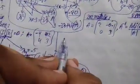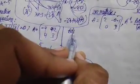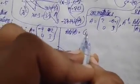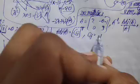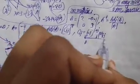We know the adjoint of A is equal to the transpose of the cofactor matrix, and the cofactor matrix is equal to (-1) to the power i+j multiplied by the minor M_ij, where i and j indicate the position and M_ij is the minor of the matrix.